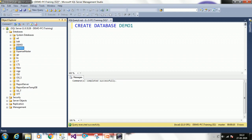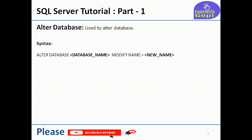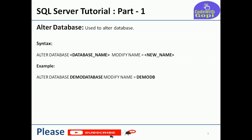Then we will discuss how to alter a database — how to rename it. Suppose I created a database named 'demo' and I want to change it to another name. The syntax for altering a database is: ALTER DATABASE [existing database name] MODIFY NAME = [new database name]. ALTER is a keyword, DATABASE is a keyword, and MODIFY NAME is also a keyword where you provide the new name.